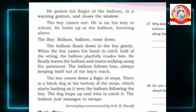He finally leaves the balloon and starts walking along the pavement. The balloon follows him, always keeping itself out of the boy's range. The boy comes down a flight of steps. There is a black dog at the bottom of the steps, which starts barking as it sees the balloon following the boy. The dog leaps up and tries to catch it. The balloon just manages to escape.